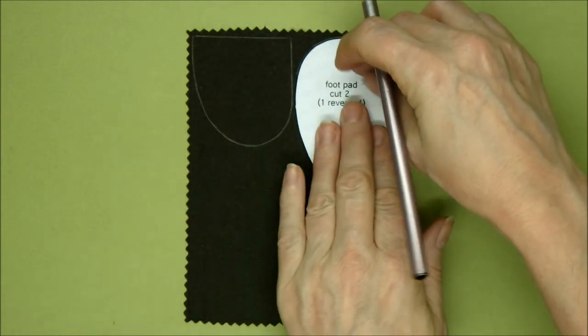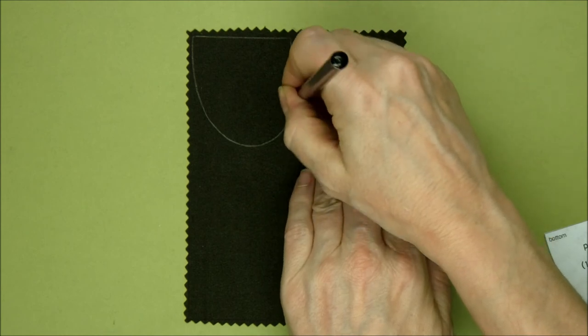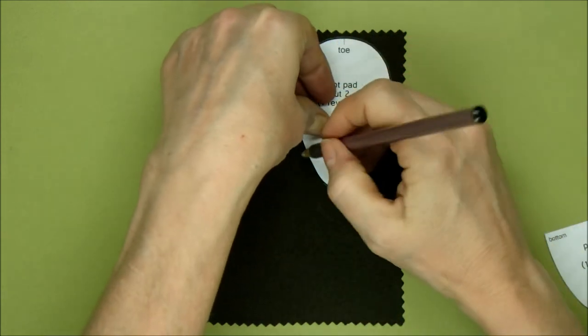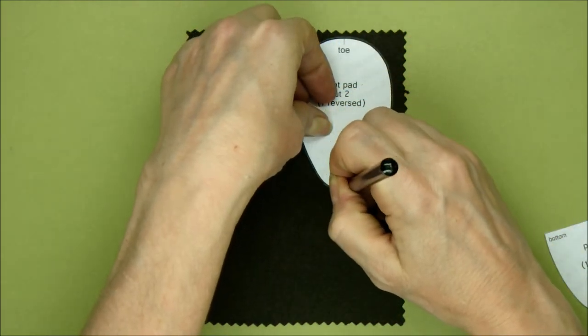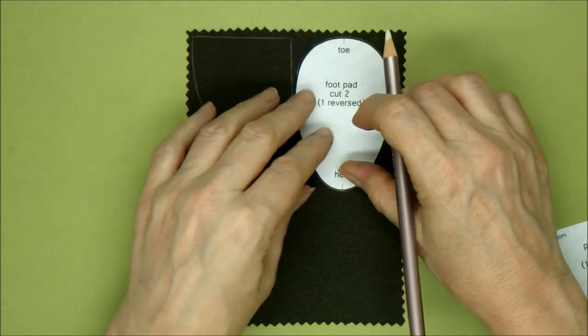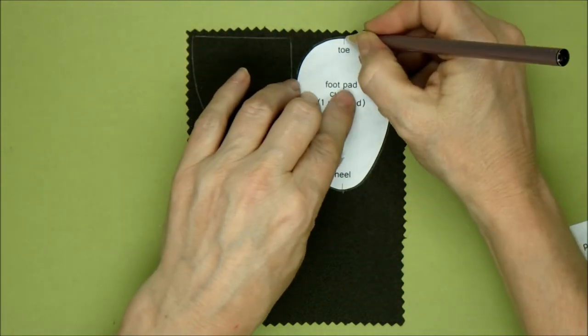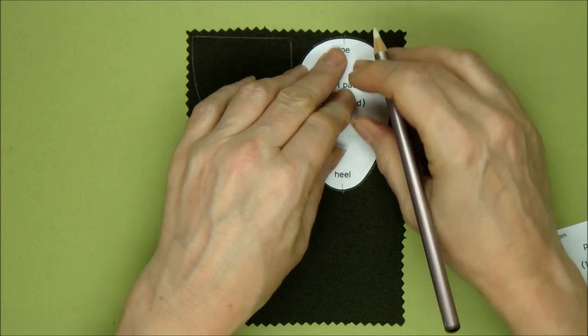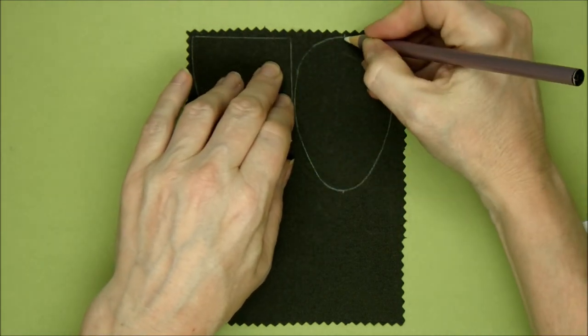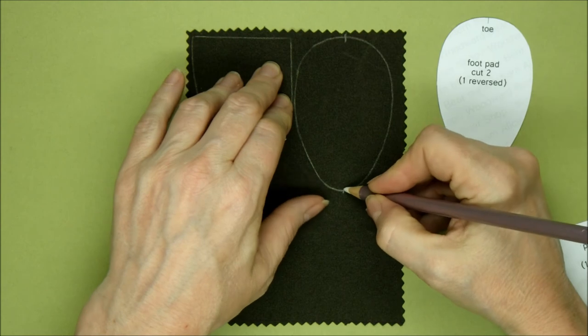One that indicates the heel and joins to the back seam, and one that indicates the toes and joins to the front seam. So make sure, again, these are on your pattern piece. And that all helps to line it up when you're putting it together.